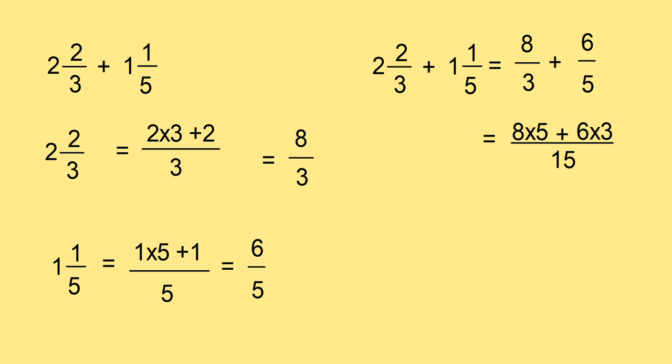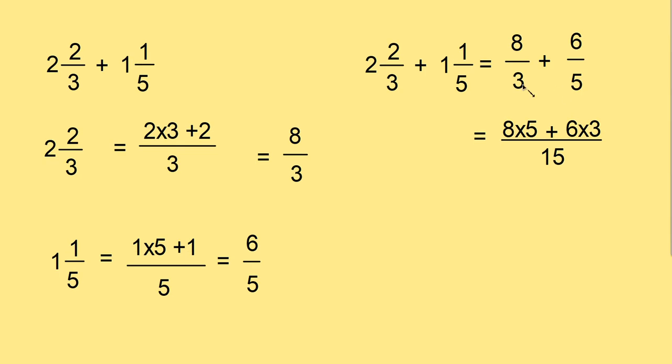Otherwise also, here also you can use cross multiplication. Since there is no common factor in 3 and 5, you can multiply in this way. 5 into 8. That is 8 into 5. Then 6 into 3. In this way. And divided by 3 into 5. Then also you can get the answer instead of taking LCM.